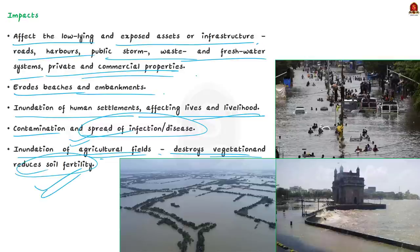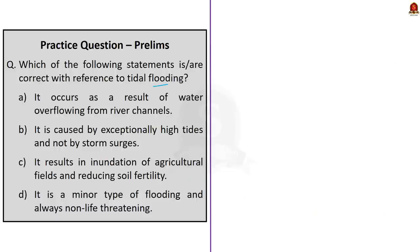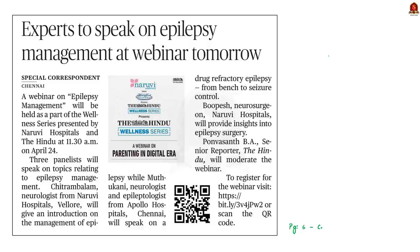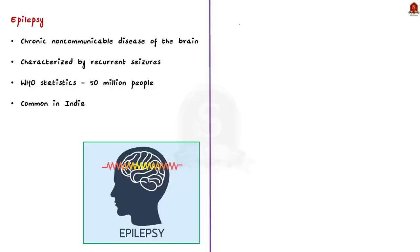In this discussion we learned about tidal flooding, also called coastal flooding, the temporary inundation of coastal areas during exceptionally high tides or storm surges. Storm surges are the abnormal rise in sea level generated by storm. We've seen some impacts of tidal flooding. Now look at this article. It says a webinar on epilepsy management is going to be conducted as part of the wellness series presented by Narayana Hospitals and The Hindu. Let us learn about epilepsy from prelims perspective.